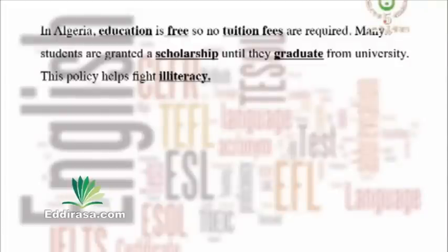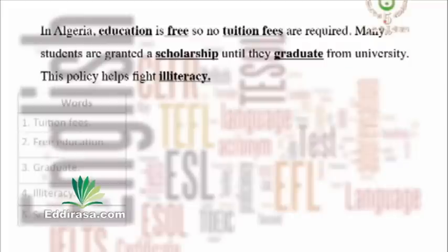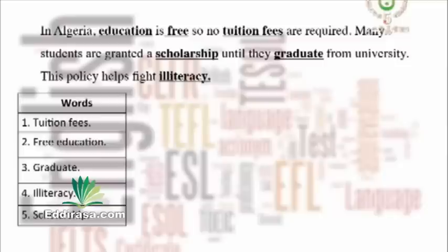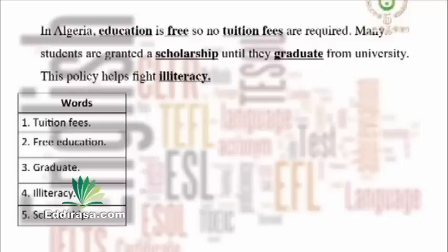Let's start our activity. Read first the words that are in the table: tuition fees, free education, graduate, illiteracy, and scholarship. As usual, you have to pay attention to the category of words. Let's see what kind of words we have.